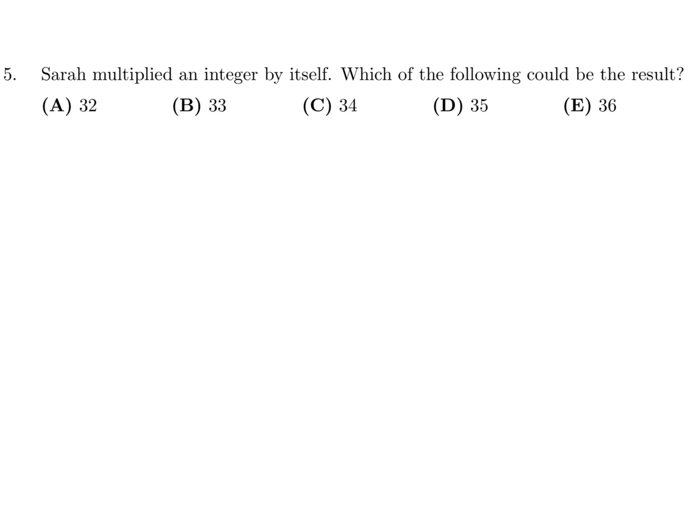Sarah multiplied an integer by itself. Which of the following could be the result? So if you take any integer and then multiply it by itself, they're saying, what could it be? So basically, that's N squared. So the result has to be a perfect square.